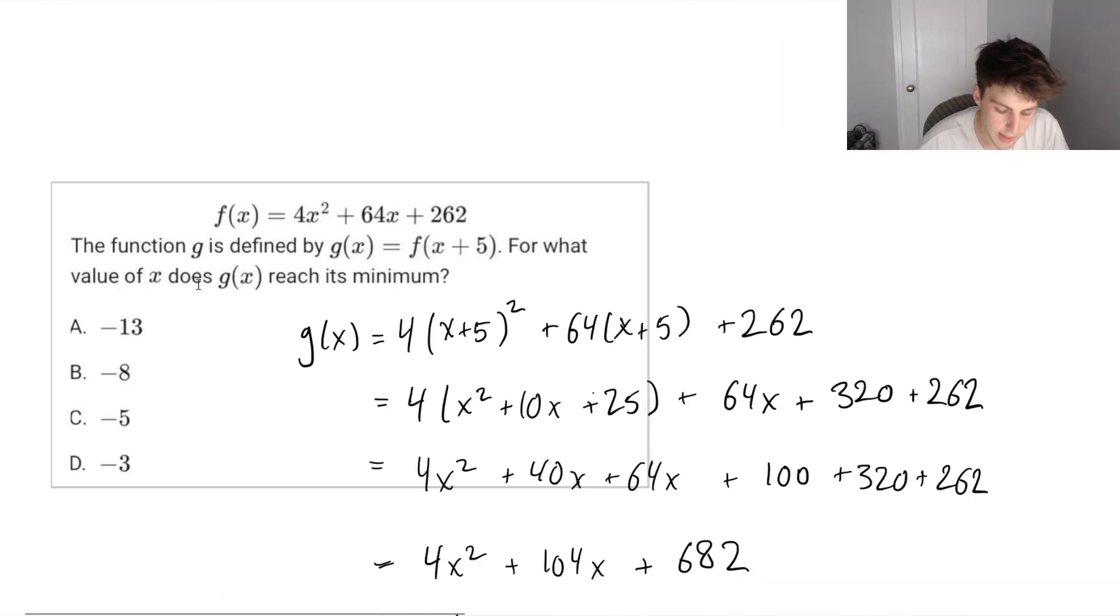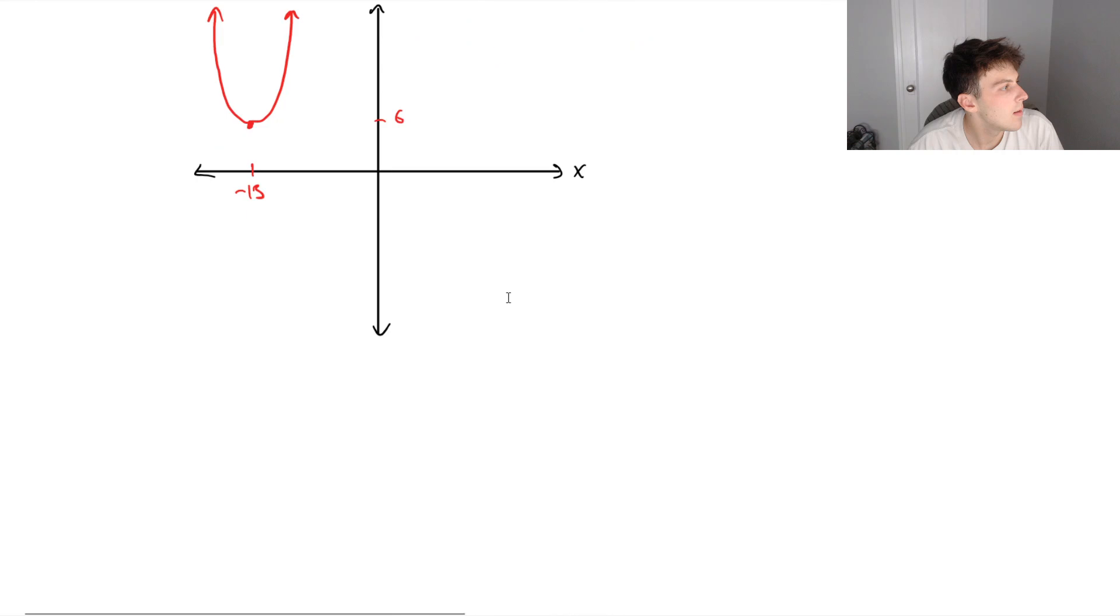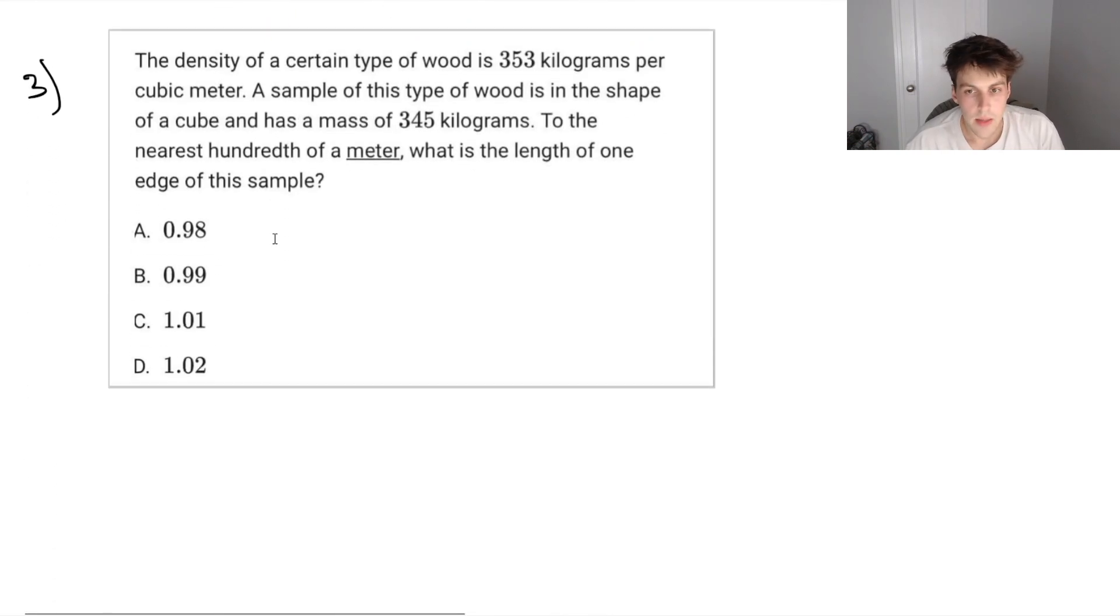So option A is the correct answer here. Let's move on to the next question. The density of a certain type of wood is 353 kilograms per cubic meter. A sample of this wood is in the shape of a cube and has mass of 345 kilograms. To the nearest hundredth of a meter, what is the length of one edge of this sample? So we've got a lot of information from this question. Let's just write out some of it.